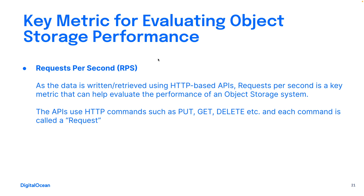A key metric for evaluating object storage is requests per second, or RPS. Since data is returned or retrieved using HTTP-based APIs, RPS is a key metric for evaluating the performance of an object storage system. All your requests are HTTP commands such as PUT, GET, DELETE, etc., and the number of requests a storage system can process is measured in terms of requests per second.